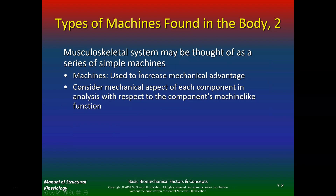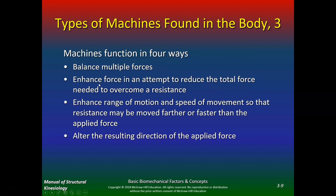The musculoskeletal system may be thought of as a series of simple machines used to increase mechanical advantage. Machines function in four ways: they balance multiple forces, enhance force to reduce the total force needed to overcome a resistance, enhance range of motion and speed of movement so that resistance may be moved farther or faster than the applied force, and alter the resulting direction of the applied force. A good quiz question would be: machines do all of the following except — so make sure you know all four functions.